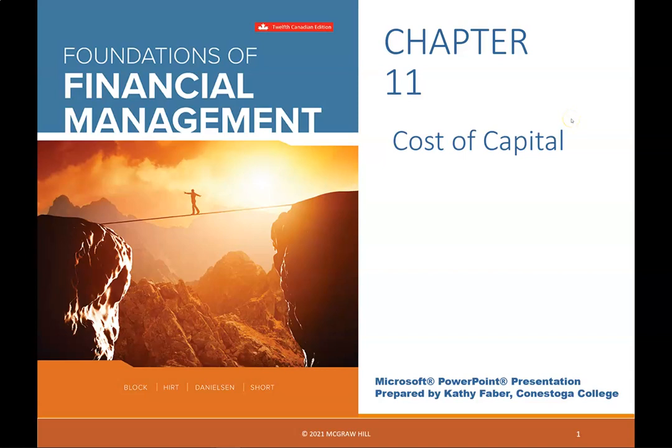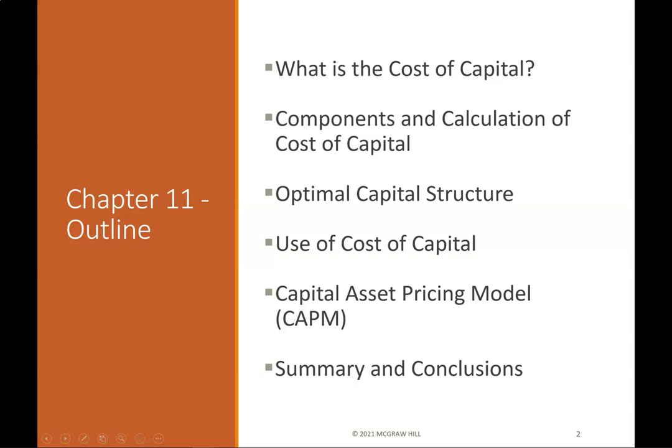Chapter 11: Cost of Capital. The chapter outline covers what is the cost of capital, its components and calculation, optimal capital structure, use of cost of capital, and the capital asset pricing model (CAPM).